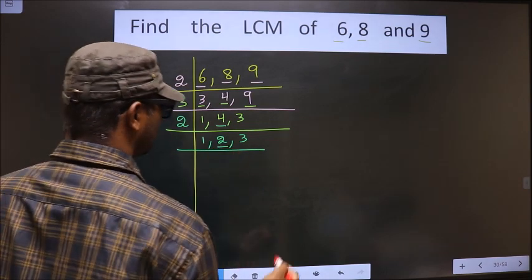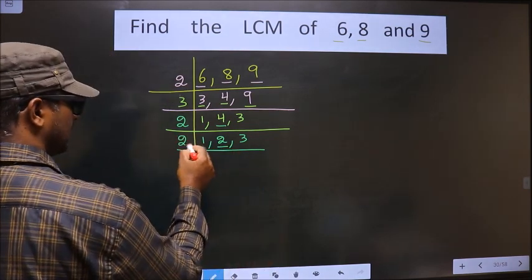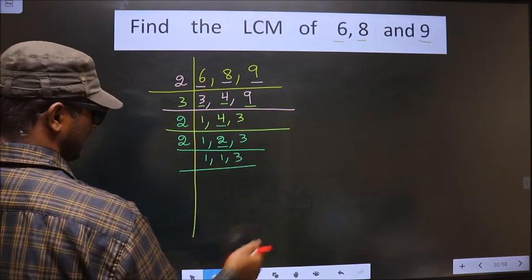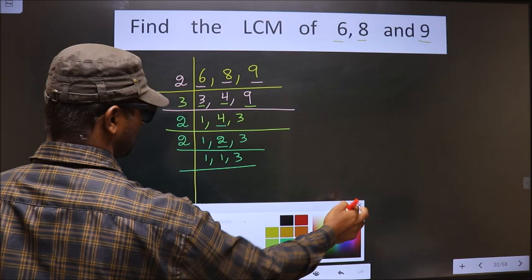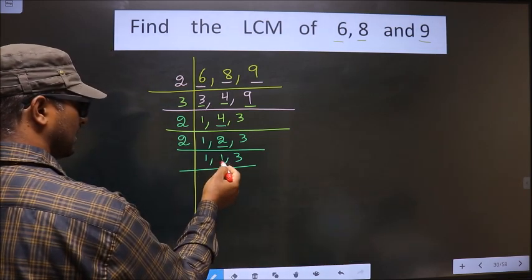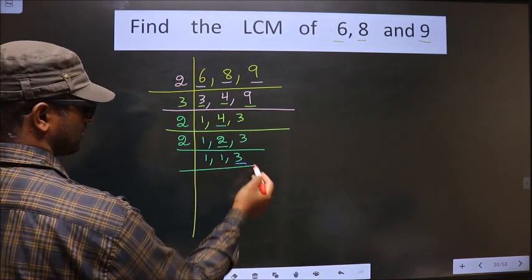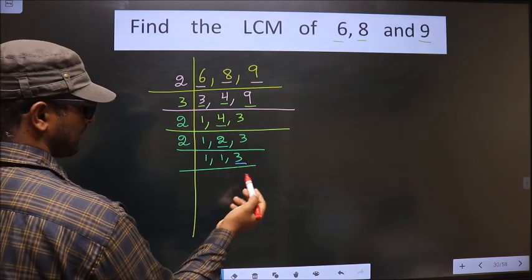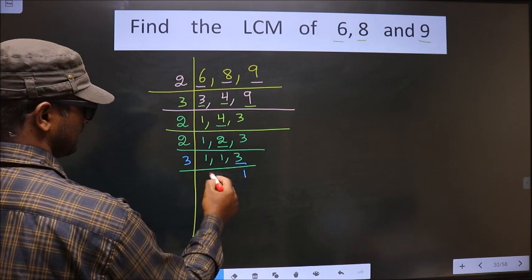Now here we got 2. 2 is a prime number so I take 2 here. 2 wants 2. 3 is not divisible so you write 3 as it is. Now here we got 1, here we got 1 so focus on the next number that is 3. 3 is a prime number so we take 3 here. 3 wants 3.